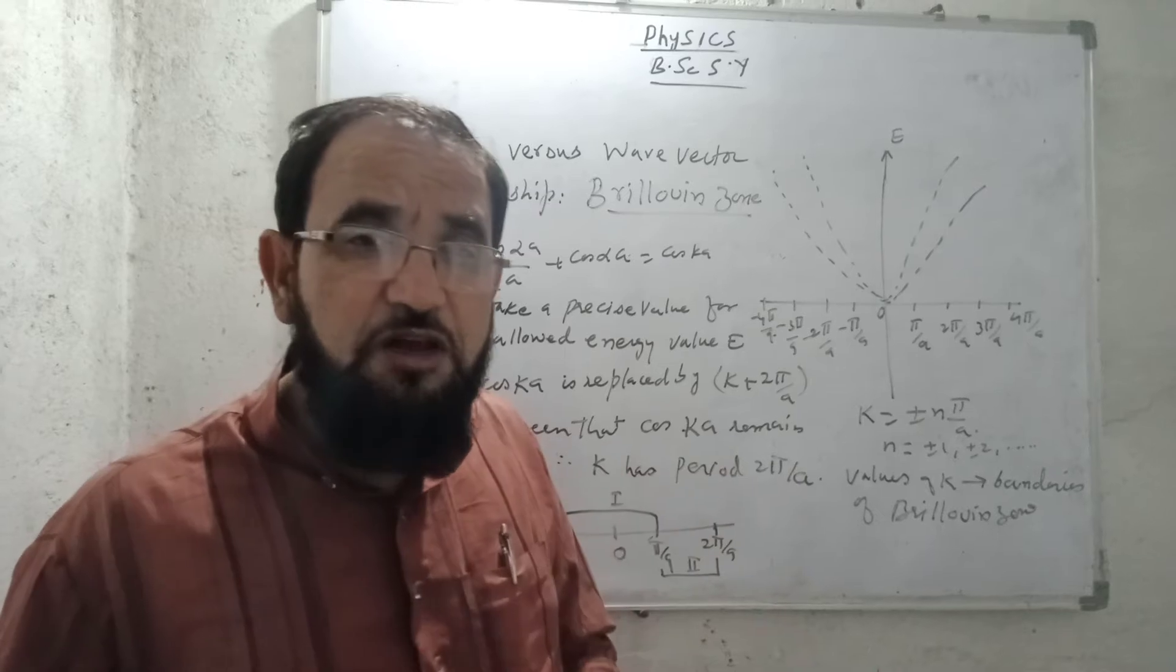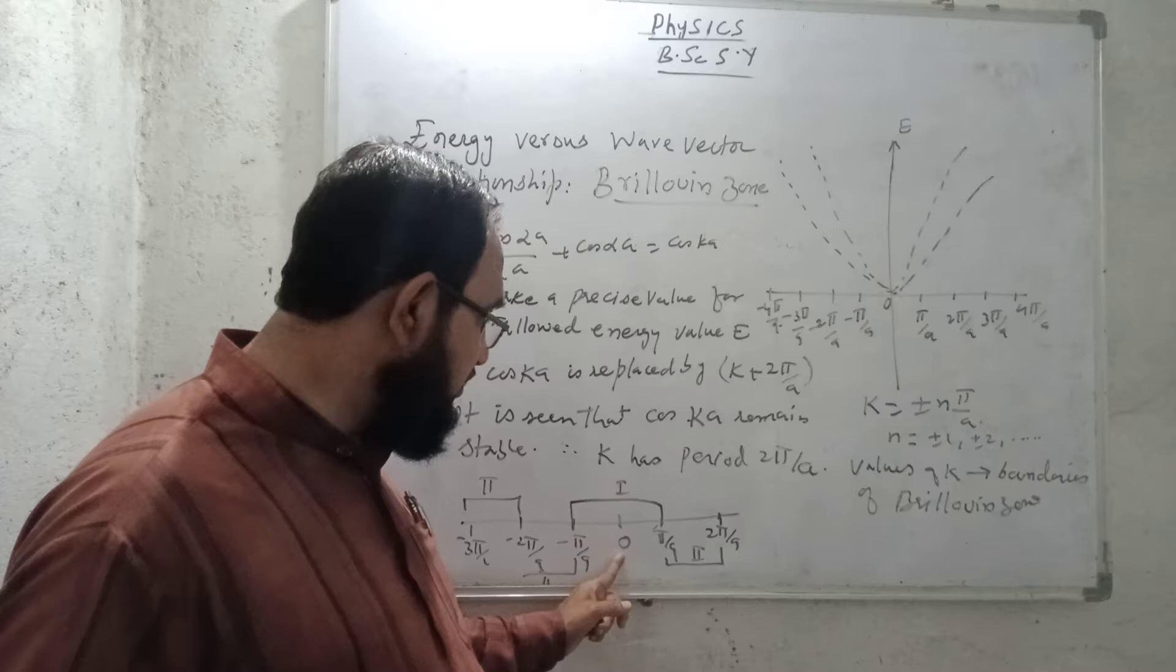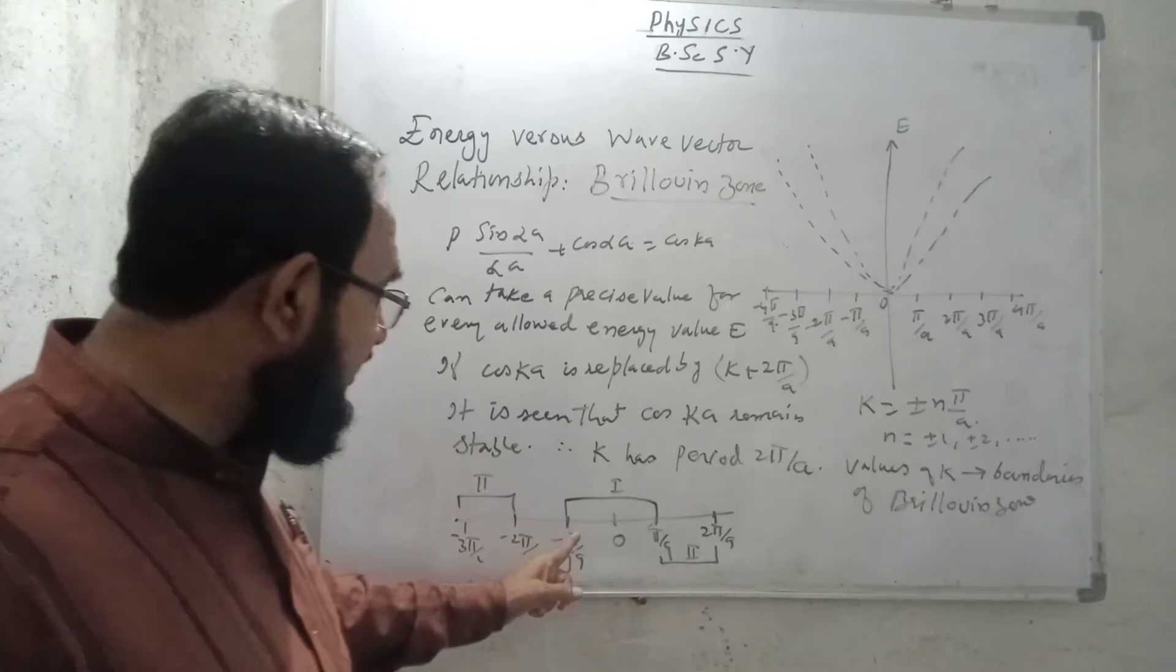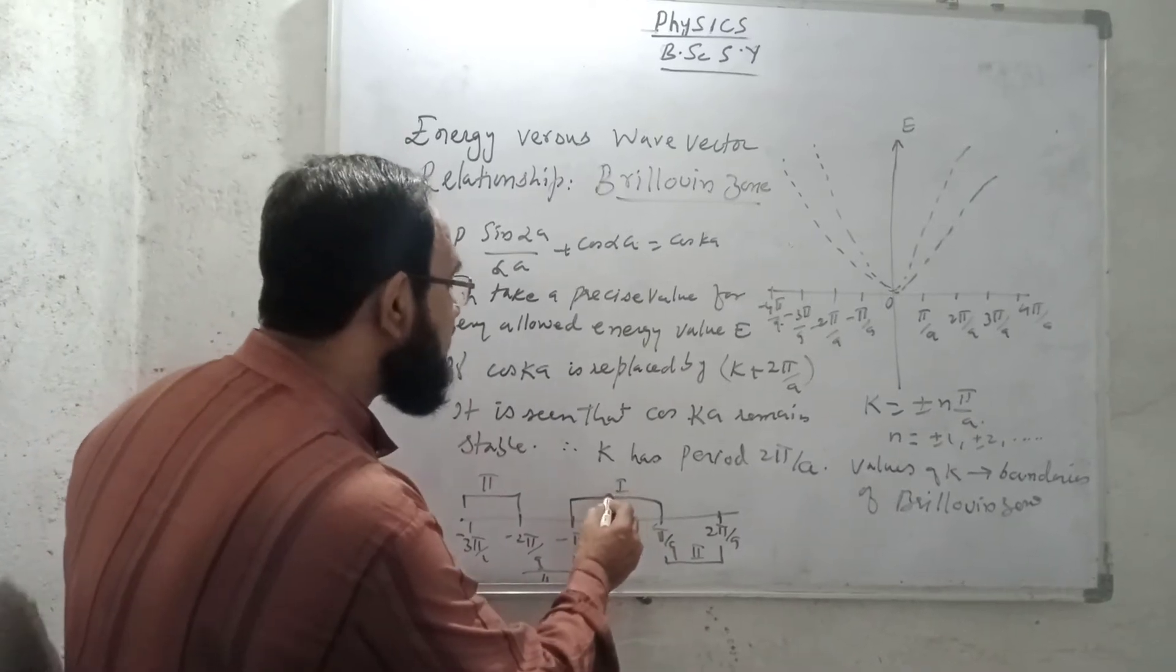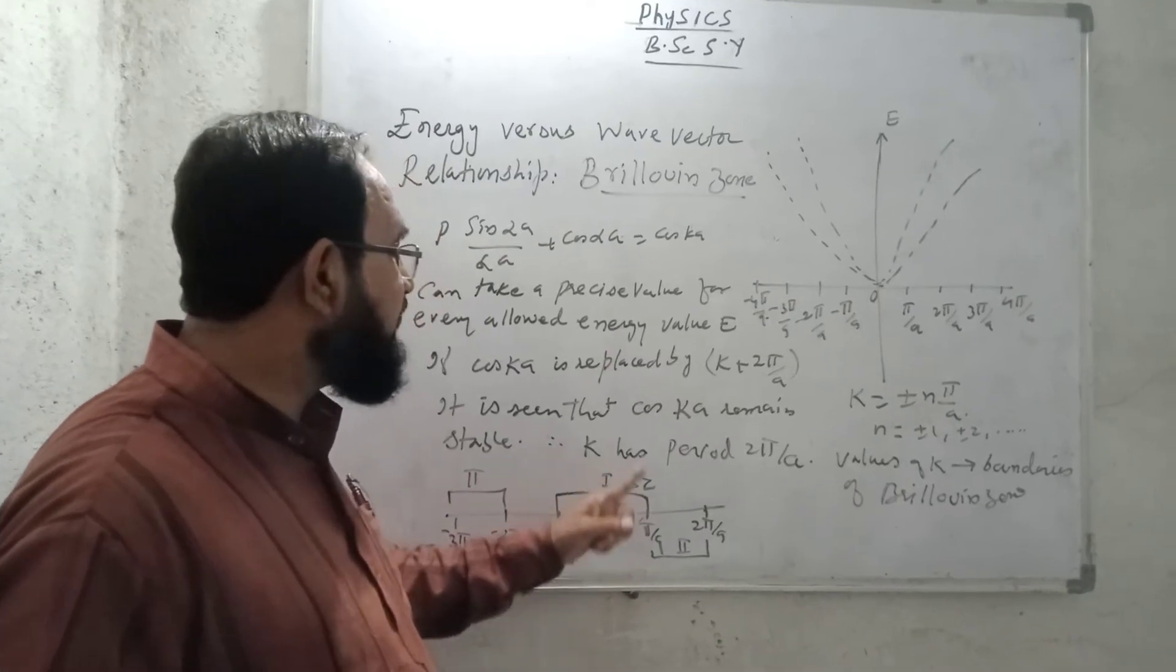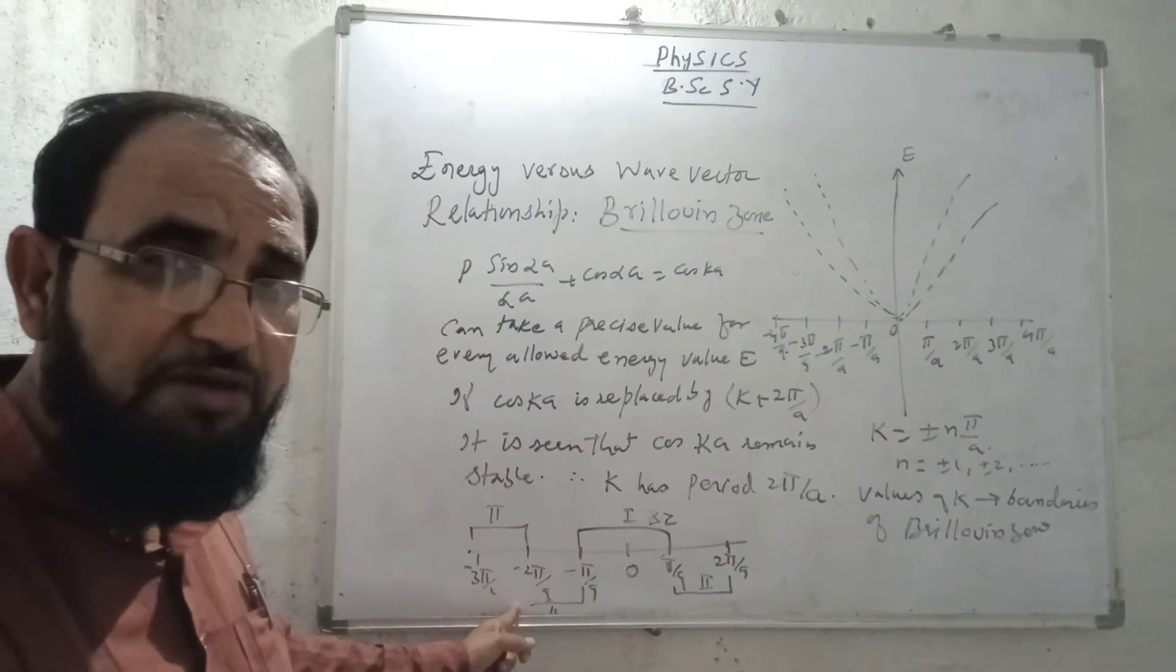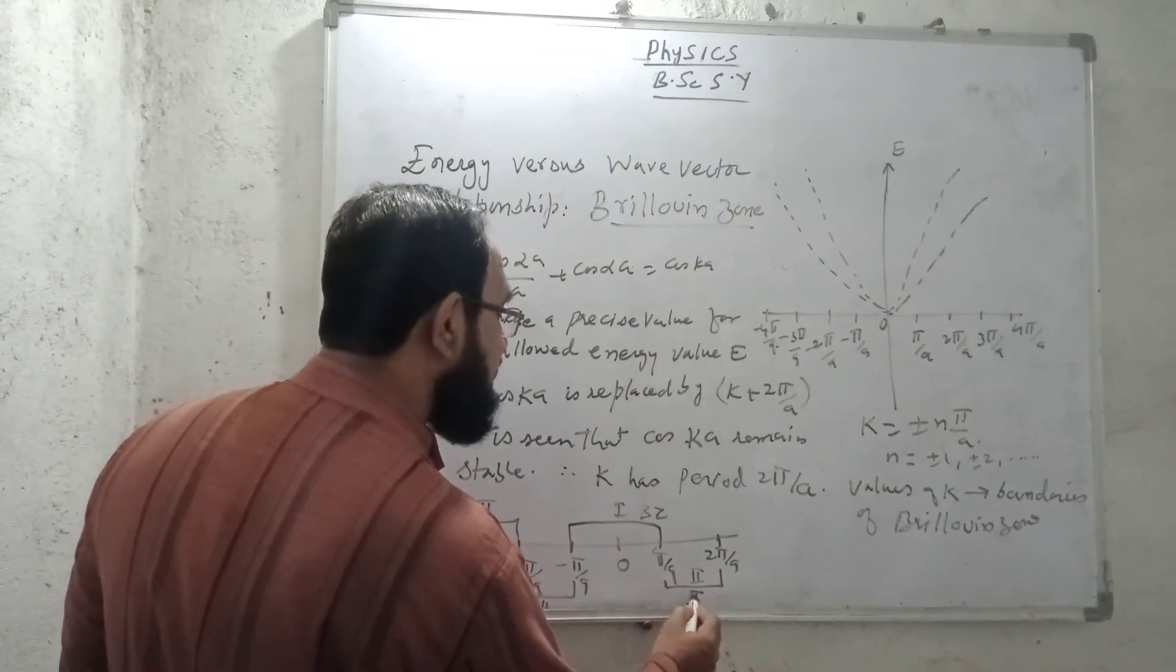So if I take the interval from minus π/A to plus π/A, it is called as the first Brillouin zone. Now if I take the value from either from π/A to 2π/A, or on the opposite side, minus π/A to minus 2π/A, it is called as the second Brillouin zone.